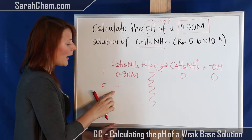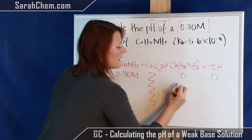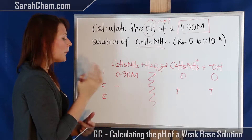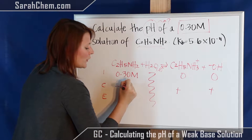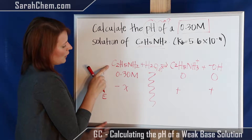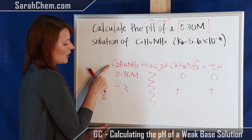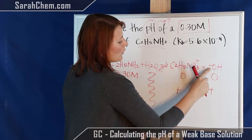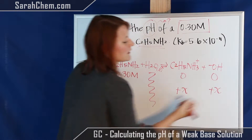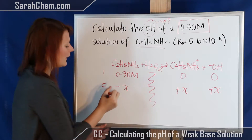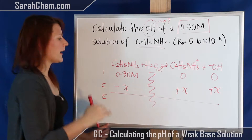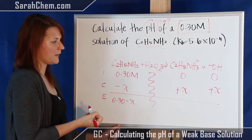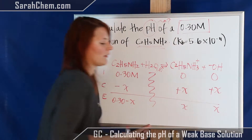Going forward means we're going to be using up some of the reactant and adding hydroxide and the conjugate acid. We know they're going to change by x amount, and we look at the coefficients. Because the coefficient for C2H5NH2 is 1, we change by negative x. We also have coefficients of 1 for each product, so we change by positive x for each. For the equilibrium row, we add it all up: 0.30 minus x for the reactant, x for the conjugate acid, and x for the hydroxide.